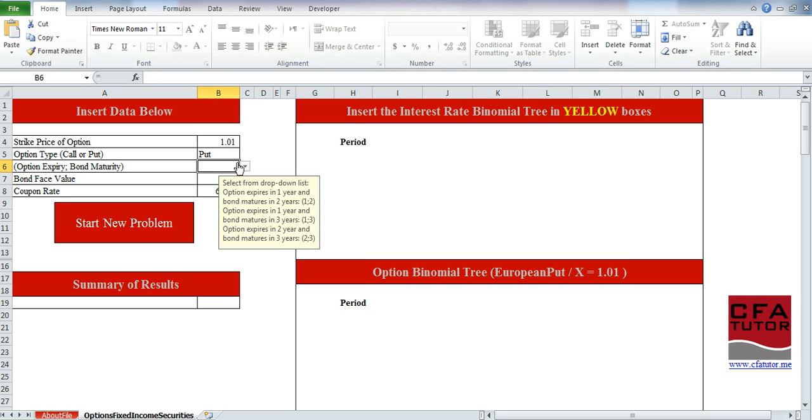Now, this is the interesting thing here: we have only three combinations that you can select from. If the option expires in one year and the bond matures in two years, you select 1 and 2. If the option expires in one year and the bond matures in three years, you select 1 and 3. If the option expires in two years and the bond matures in three years, you select 2 and 3. These are the common ones used in the CFA exam, so the file was designed based on that. In this case, the bond matures in three years and the option expires in two years, so we select this one.